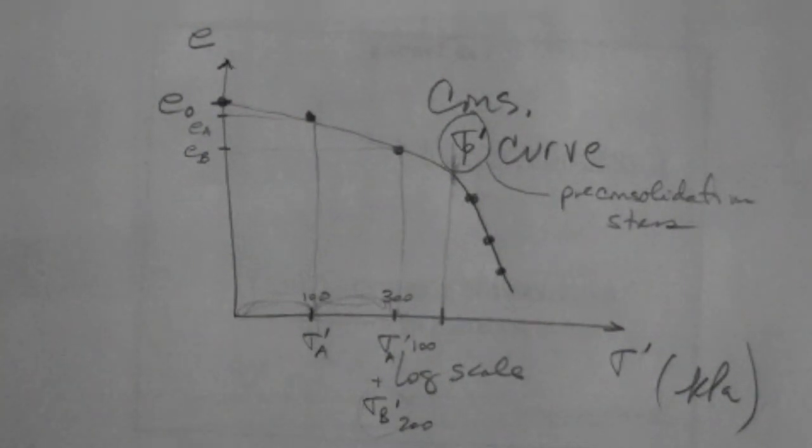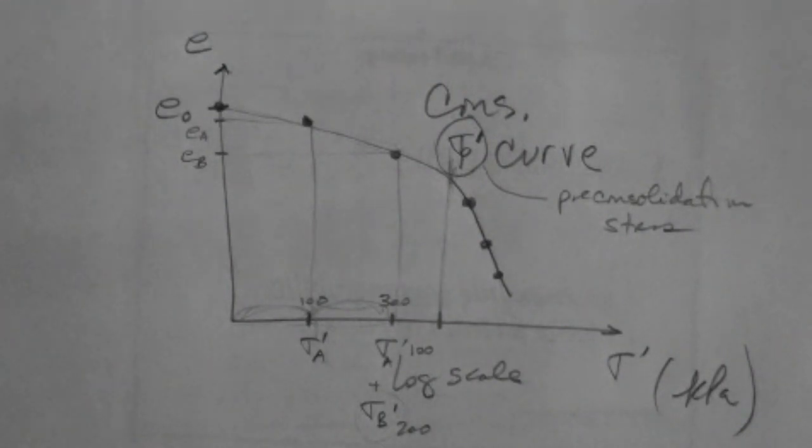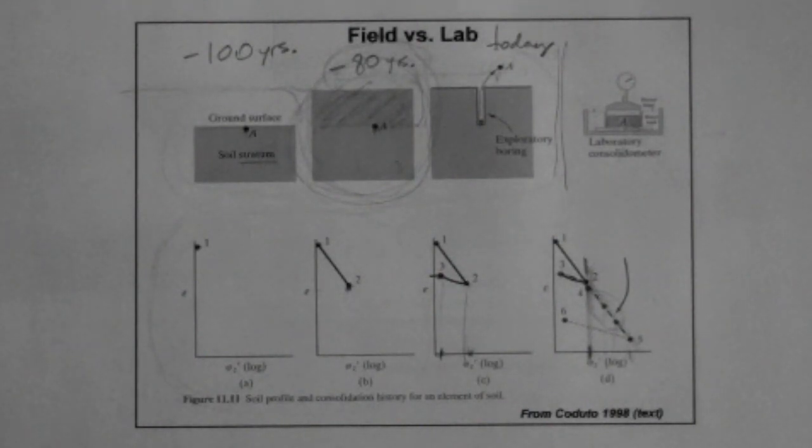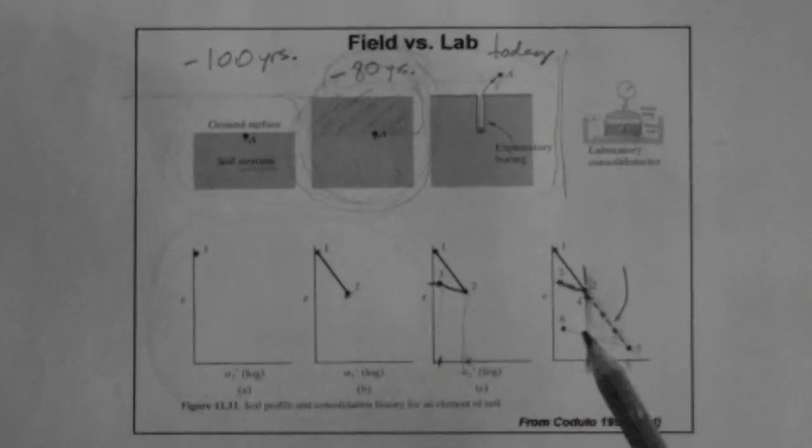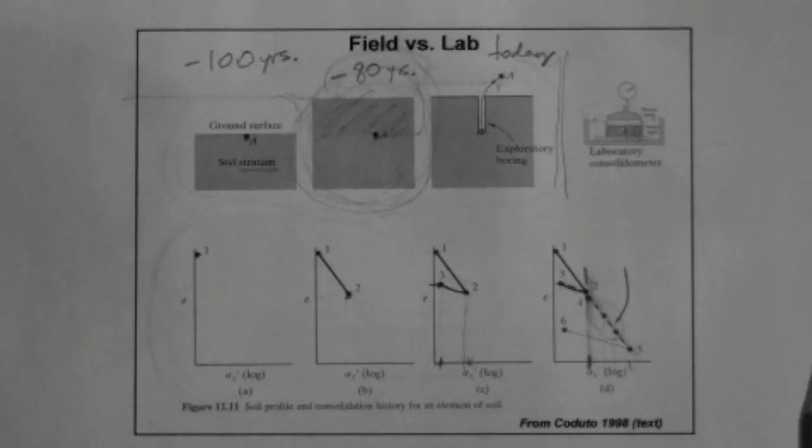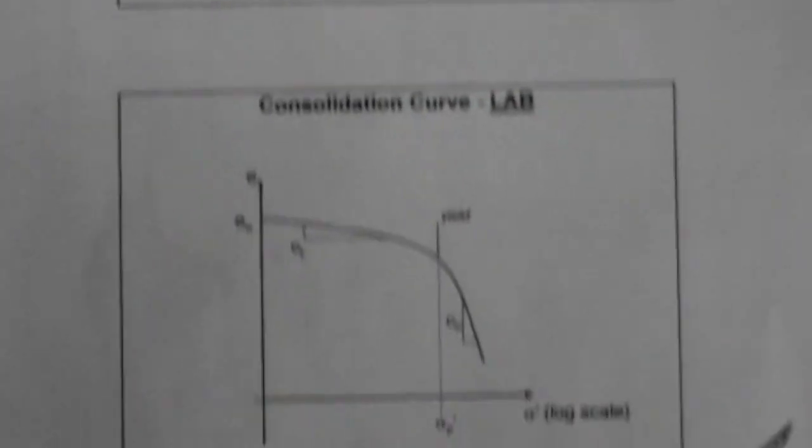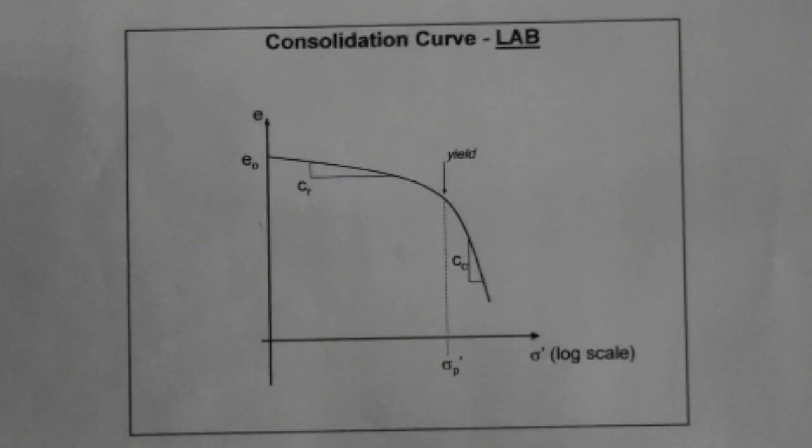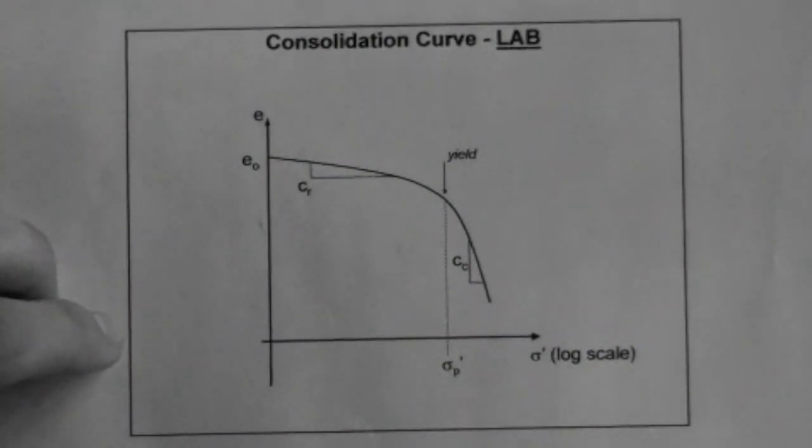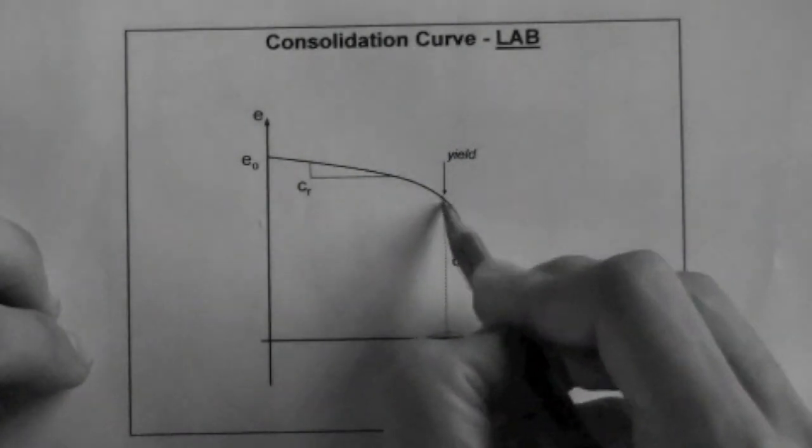And the reason why this happens is basically that the fabric, particularly of clay, the fabric of clay holds some memory in terms of how the particles were assembled before and after loading. So it's very interesting that one can determine, measure, from a lab test, one can determine the maximum stress that a soil has ever felt. That's called the sigma p prime pre-consolidation stress. It's also called the yield, but generally we use pre-consolidation stress to denote that transition.